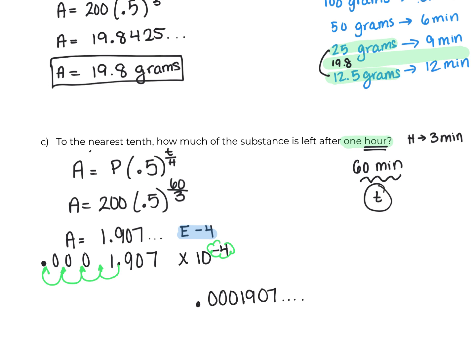I know the directions say round to the nearest tenth, but that would be zero here. So I'm going to just leave it as something along this line is how much grams would be left after an hour. So a very small amount.